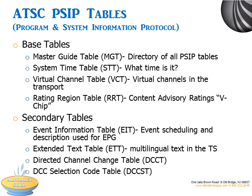Here are the main PSIP tables. The base tables start with the Master Guide Table, or MGT, a signaling table that is the directory of all the PSIP tables. The System Time Table, or STT, provides exactly that — the time of the system. The Virtual Channel Table, or VCT, is really one of the most important; it lists all the virtual channels in the transport. The Rating Region Table, or RRT, contains the content advisory ratings, or V-CHIP data, for the program or event.